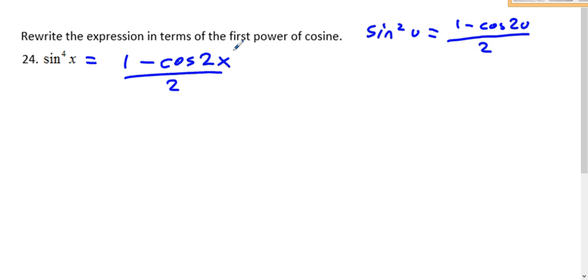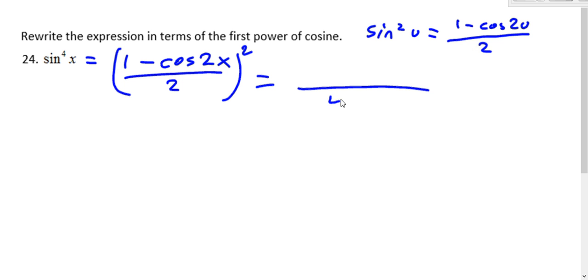But that only takes care of sine squared, so it's still squared. Now we will multiply it out. That's one minus two cosine two x plus cosine squared two x.